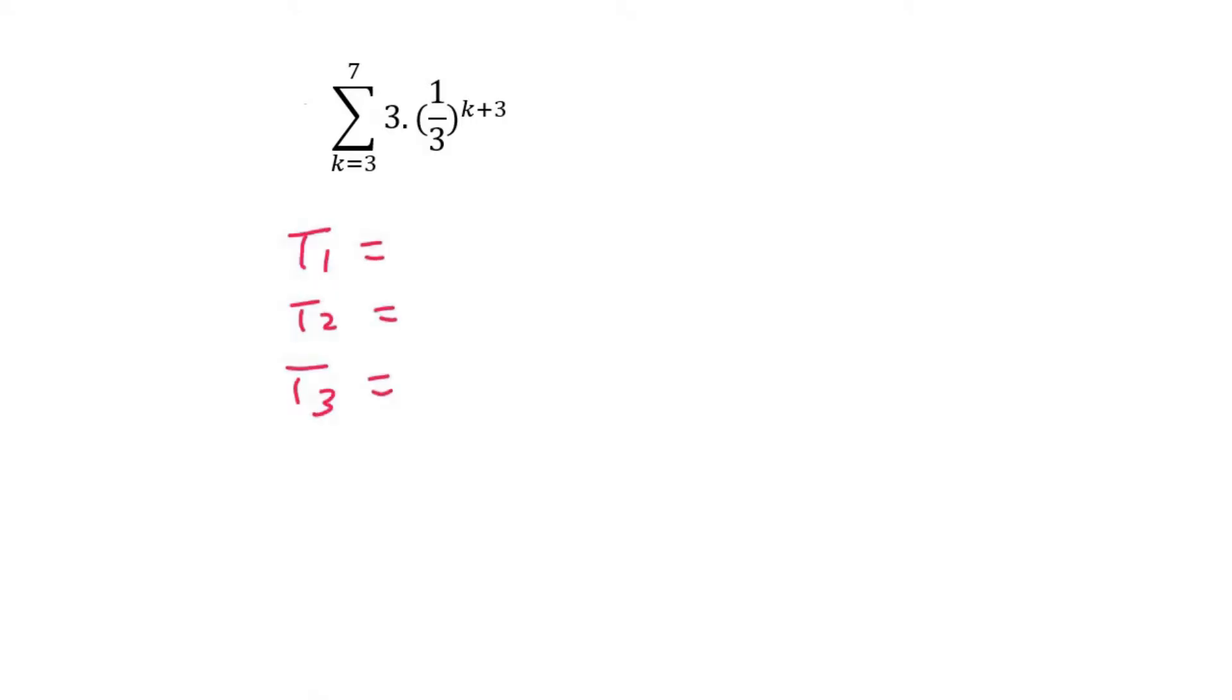To find term 1, you start off with whatever this number is. So that'll be 3 times a third to the power of k, which is 3, and then plus 3, and that'll give us 1 over 243.